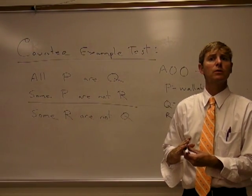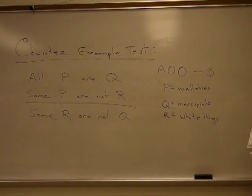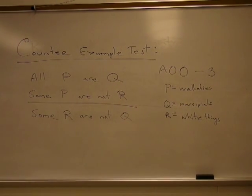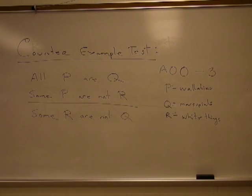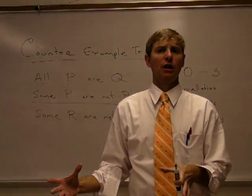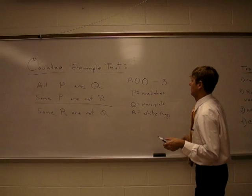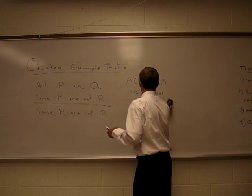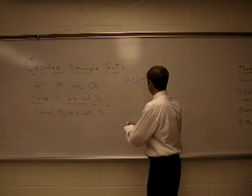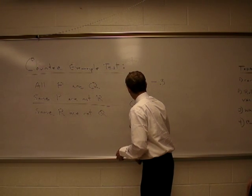Well, guess what? This one's true. We put in true premises, true conclusion. But does this prove that it's valid? No. This test only works for invalidity. So what we're going to do is try it again. What else could we substitute in for P, Q, and R?